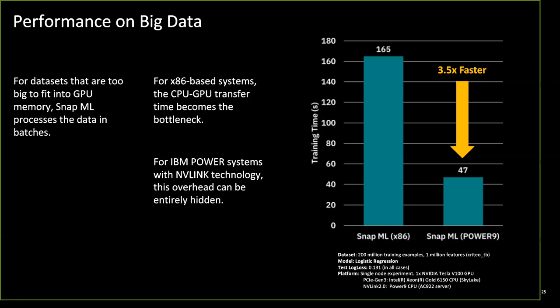An earlier benchmark used the Criteo click-through dataset: 200 million training examples and 1 million features — a massive sparse dataset. IBM Power servers show additional optimizations via NVLink between CPU and GPU, which is unique in the market. This enables efficient out-of-core processing where data transfer between system memory and GPU memory no longer becomes a bottleneck.